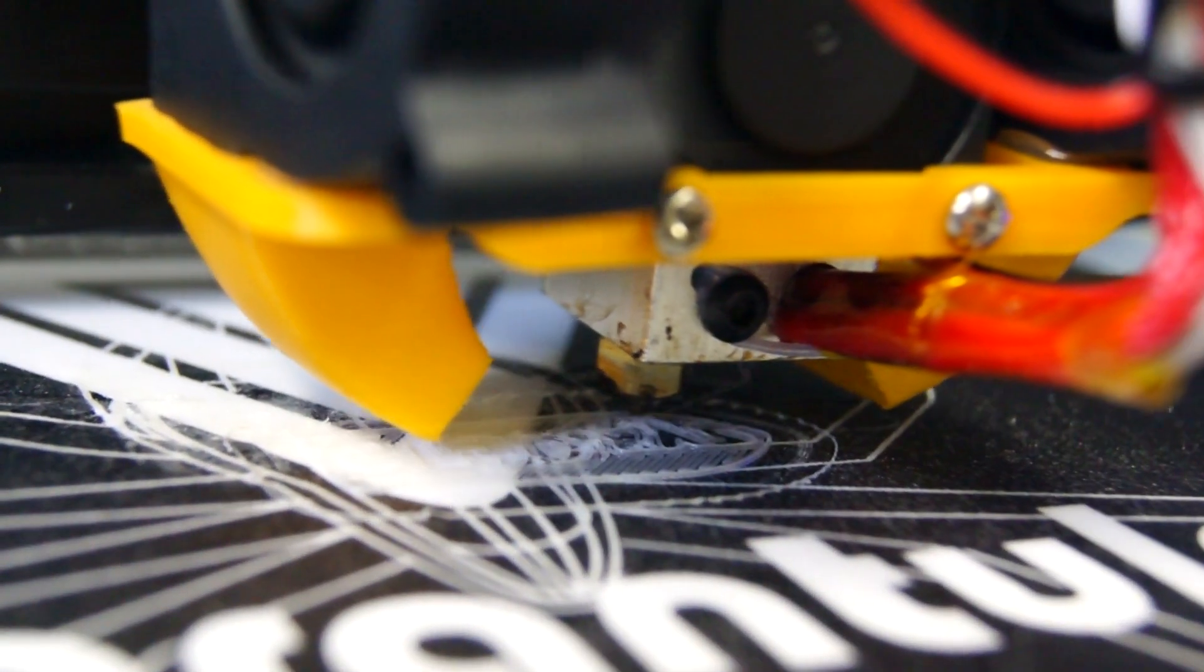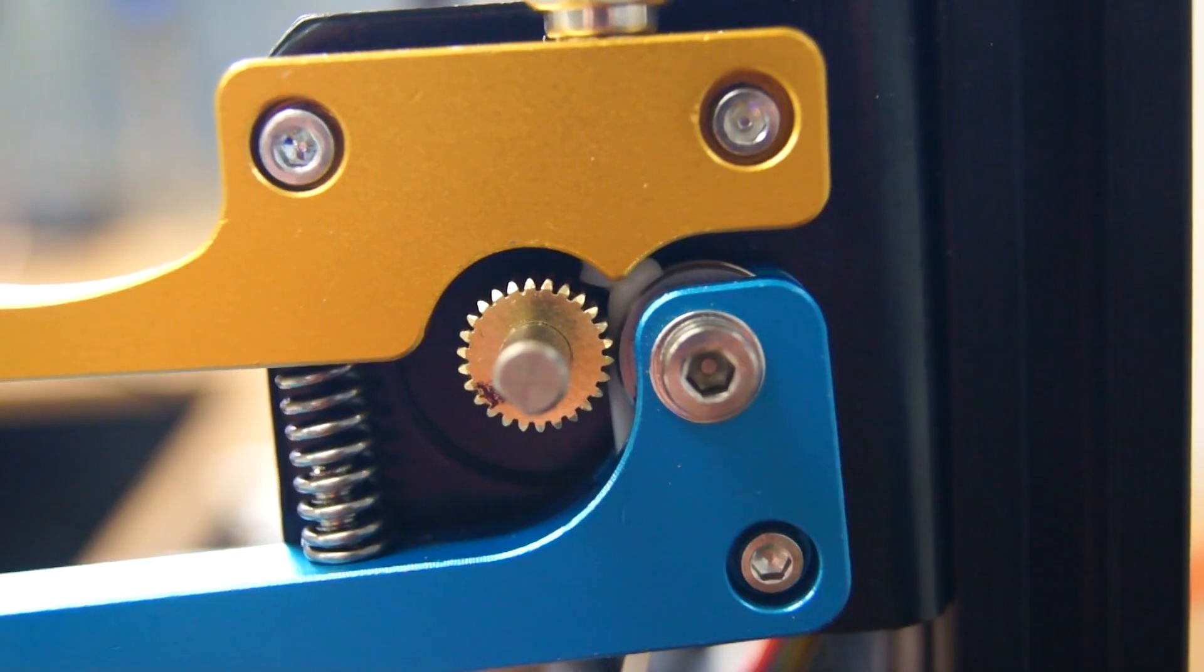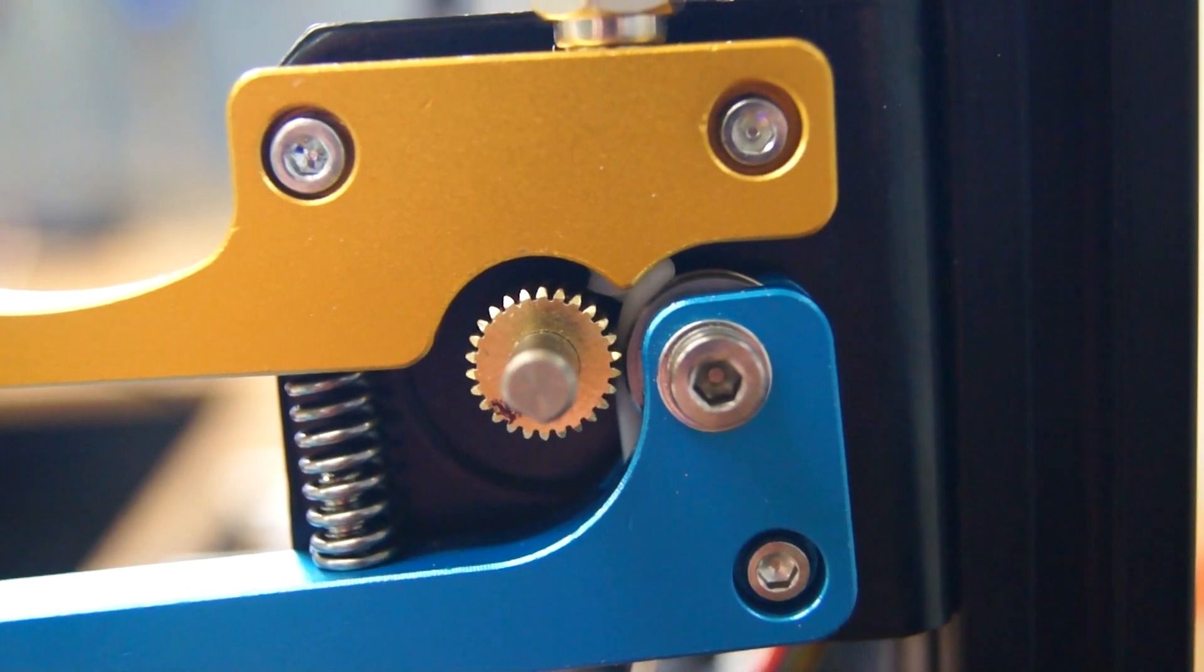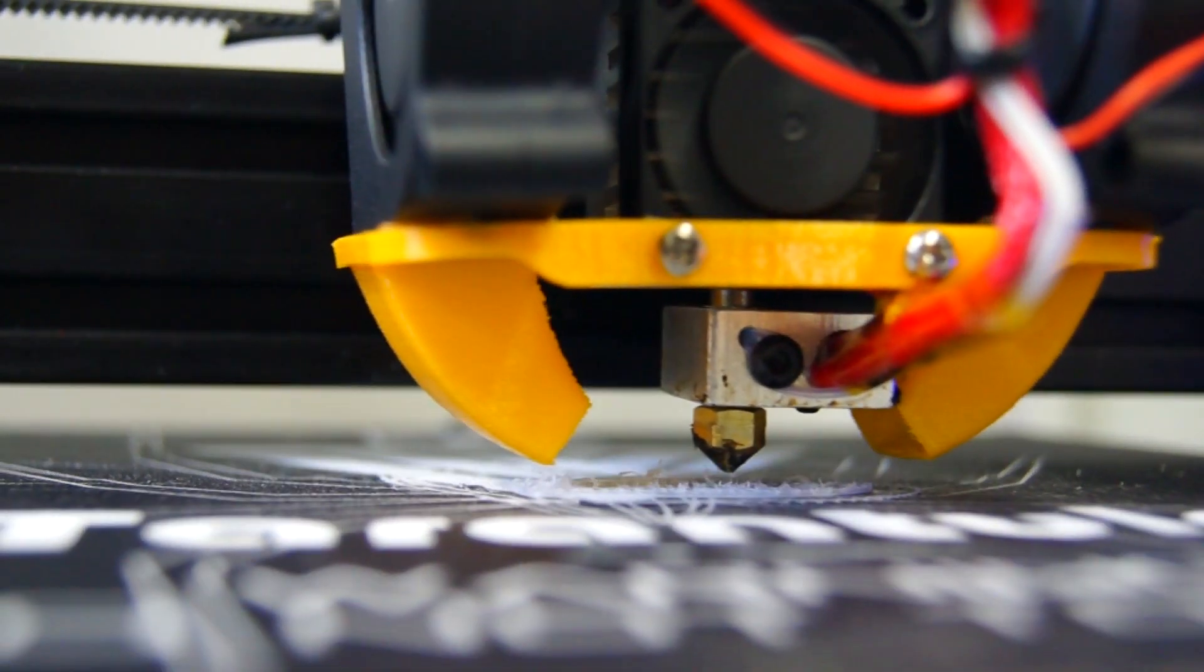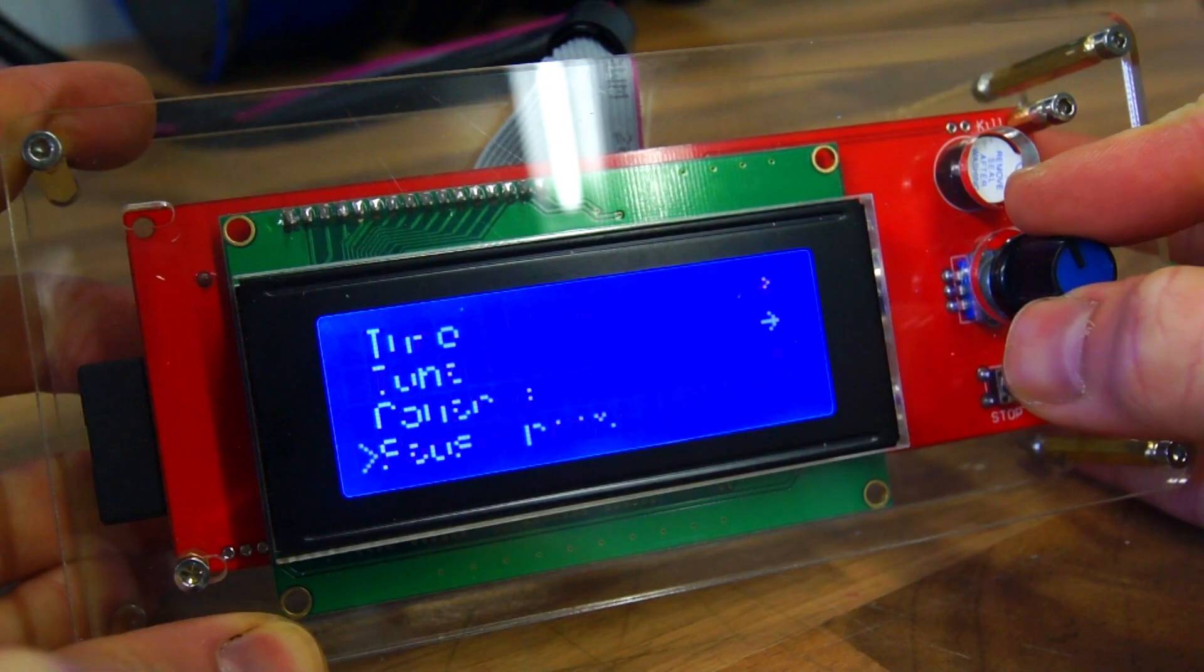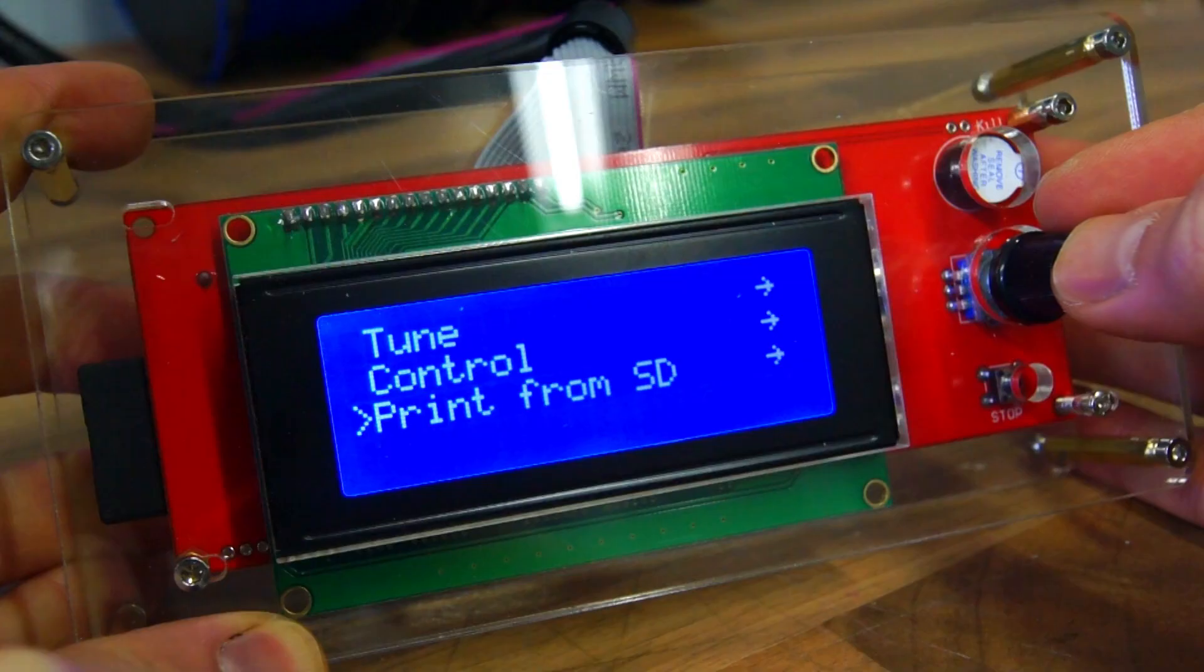Almost immediately I could see the Tarantula face the common problem of jamming caused by the filament flexing inside the extruder assembly. After a couple of minutes it clearly wasn't printing at all, so I stopped the Tevo Tarantula and focused on the N88.